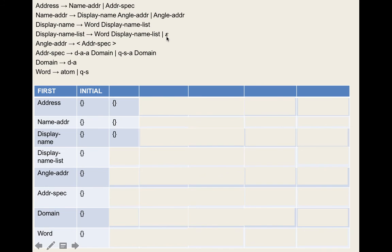We run it again. For address, name-address's first set is still empty. Address-specification gives us dot-atom-at and quoted-string-at. For name-address, display-name now has atom and quoted-string — we add those. Angle-address gets the left angle bracket. We do it again: name-address now has {left-bracket, atom, quoted-string}, so address gains those. We verify nothing changes on the final pass.